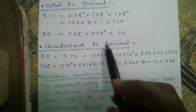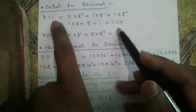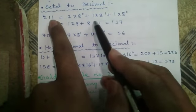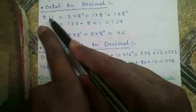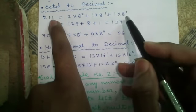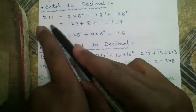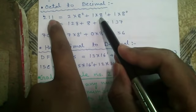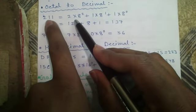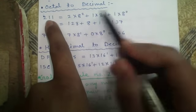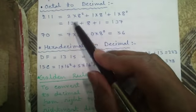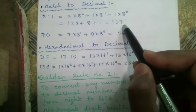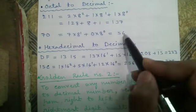Octal to decimal conversion: same process. Scan from right to left; source base is octal. For 211: 1×8⁰ + 1×8¹ + 2×8² = 1 + 8 + 128 = 137. Do it yourself.